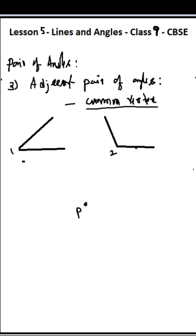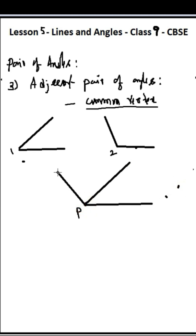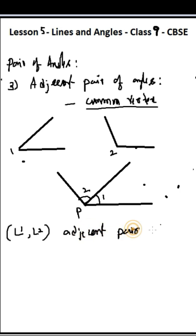Let me draw a vertex P. Now let me draw two angles here. This is one ray, and this is one more ray — one angle is formed here. If I draw one more ray, then there will be two angles — this is one and this is two. So angle one and angle two are called adjacent pairs of angles, or simply adjacent angles. It's not that angle 1 plus 2 equals 180 or 90 — they are just adjacent angles.